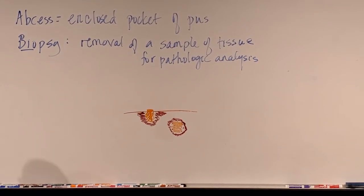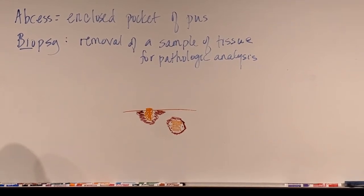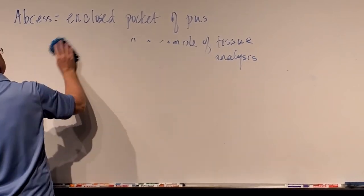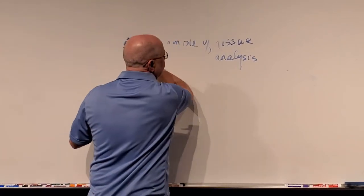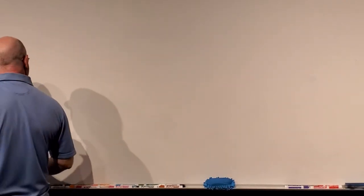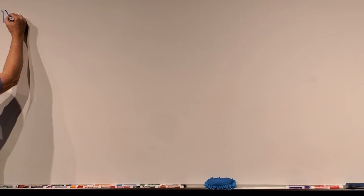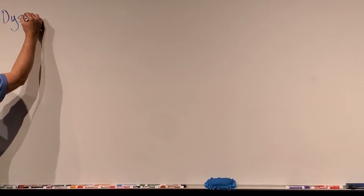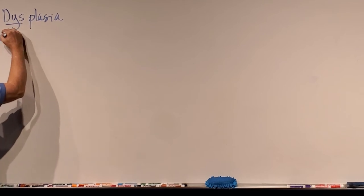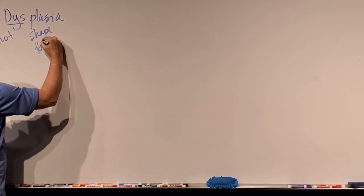Once we do the biopsy and a pathologist does a biopsy, they're going to send a report, and that report will very often have some of this language. One of the terms is called dysplasia. The prefix 'dys' means not or abnormal, and '-plasia' refers to shape or form — like plastic can be molded into multiple shapes.